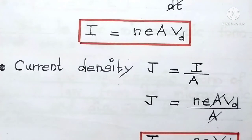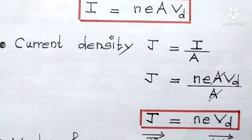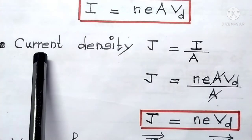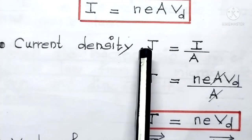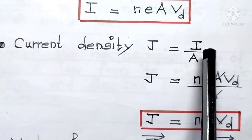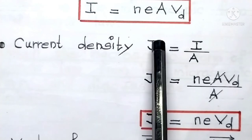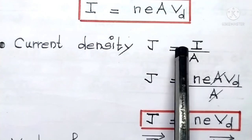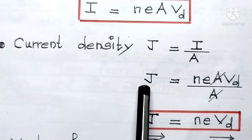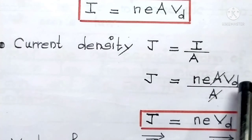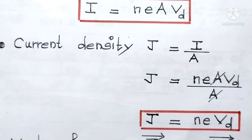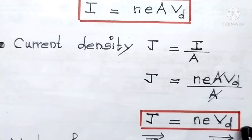In the next step, we find the current density J. Current density is current per unit area, so J = I/A. Substituting I = n·e·A·Vd, the area A cancels, giving J = n · e · Vd. This is the expression for current density.